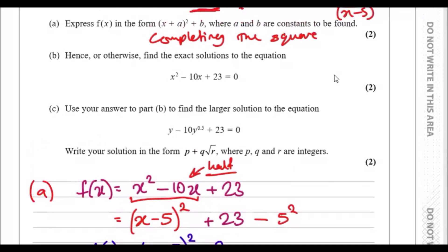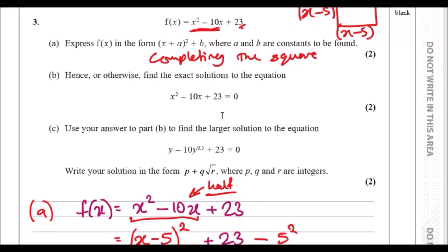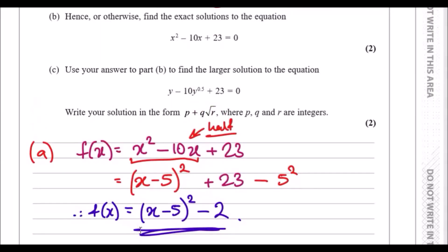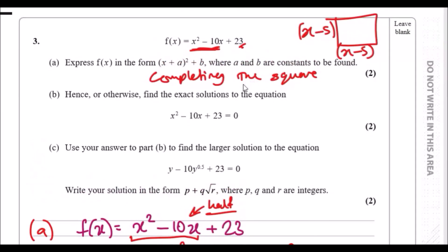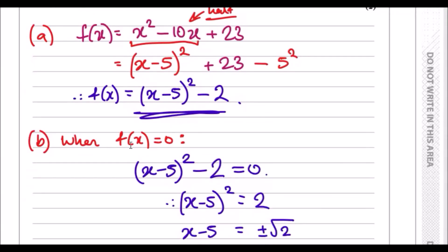Now let's look at part b. So hence or otherwise find the exact solution to what we just did. We're going to use the completing the square format. Notice that all that's happened is that the function f(x) is now equal to zero. So let's set this equation to zero and solve.